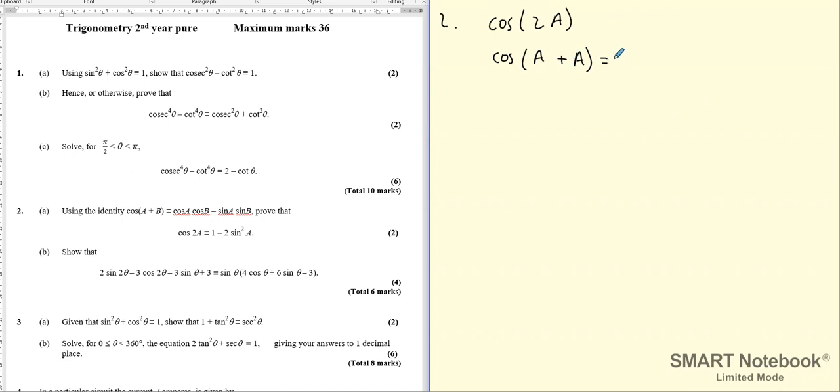And once we write it as a sum of two angles, then we can use the identity, the addition rule for cos.